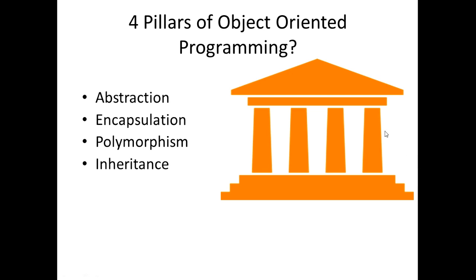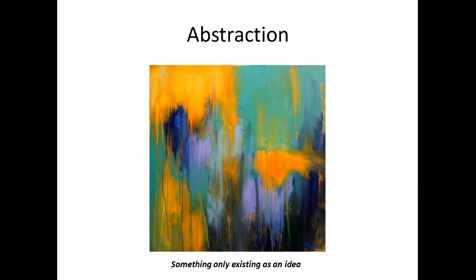As you can see, we have an example of what pillars are — one, two, three, four pillars — and they're all used to provide support to this building. When it comes to object-oriented programming, the four pillars are abstraction, encapsulation, polymorphism, and inheritance. I'm going to go through and explain each one of these concepts and show you how they provide support for object-oriented programming.